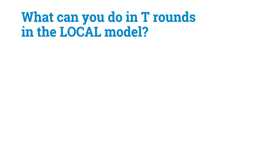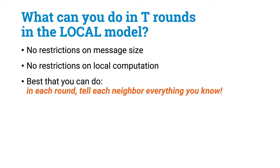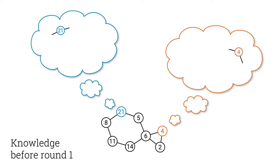But there is another way to define the same thing. Let's think about what we can do in T rounds in this model. We didn't restrict message size or local computation. So in each round, everyone could tell everything they know to all their neighbors — and this is also the best thing you could do. You can't tell something you don't know, and telling less won't help. Before the first round, each node knows only its own identifier, its own degree, and whatever local inputs it had. So basically, you know only your radius-0 neighborhood, and this is all you can tell your neighbors in round 1.